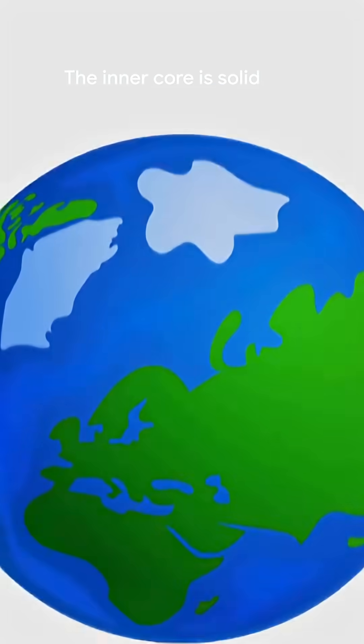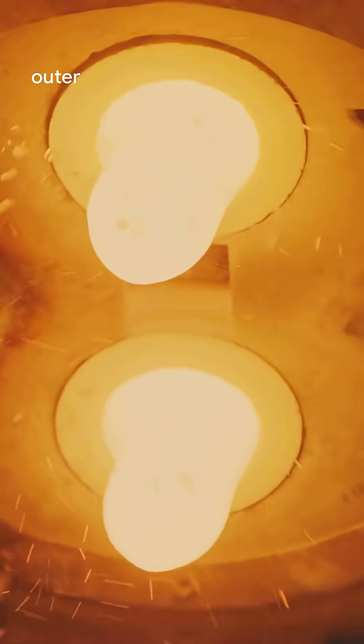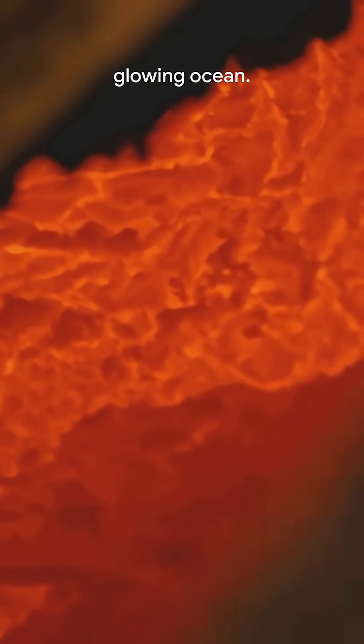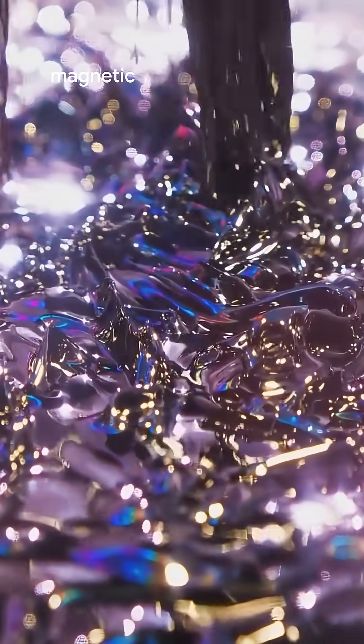The inner core is solid iron nickel surrounded by a molten outer core that moves like a slow, glowing ocean. That flow creates Earth's magnetic field.